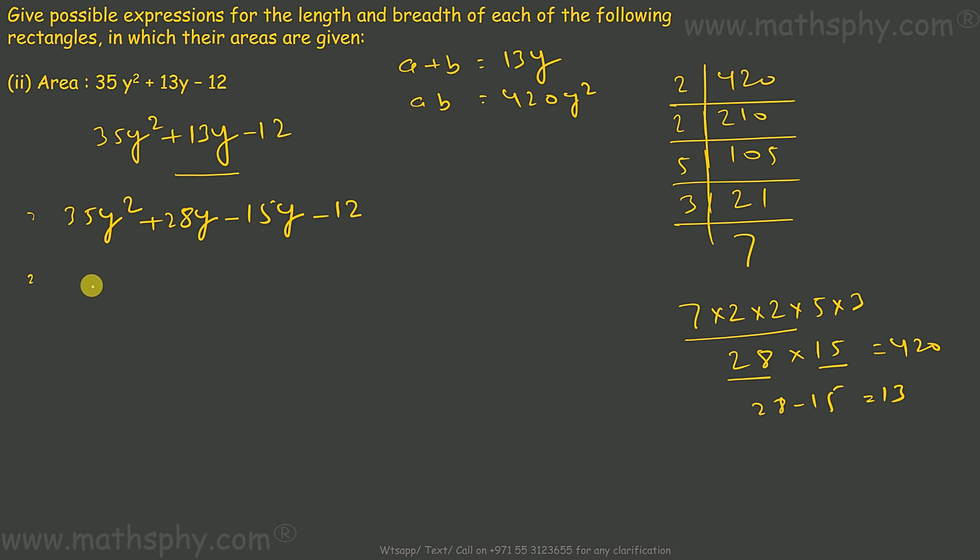This will be, if I take 7y as common, this leaves 5y plus 4, and here I take 3 as common, this leaves 5y. I have taken minus 3 as common, so 5y plus 4 it leaves. So I can take 5y plus 4 common, which leaves 7y minus 3.